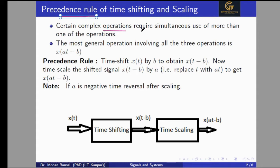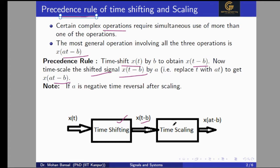We should know which operation to apply first — either time scaling, time shifting, or time reversal. According to the precedence rule, if we have a signal x, we first apply the time shift to get x(t - b), then we apply time scaling on the shifted signal. That means time scaling on x gives us x(at), because t will be replaced by at. If a is negative, we will also need to apply the time reversal on the scaled and shifted signal.